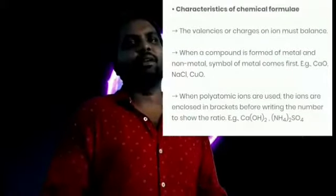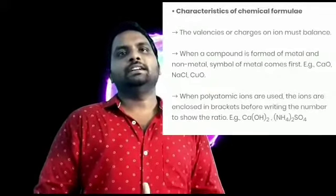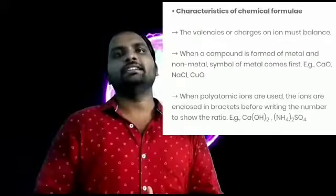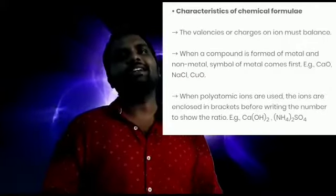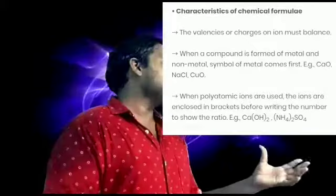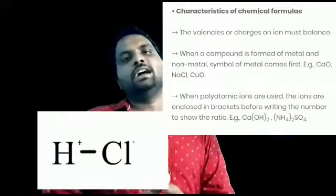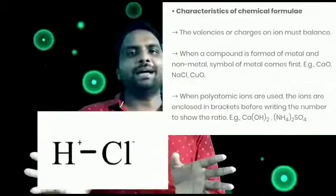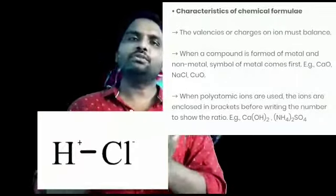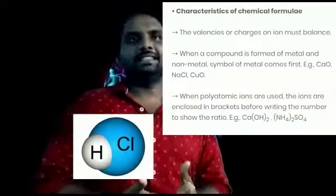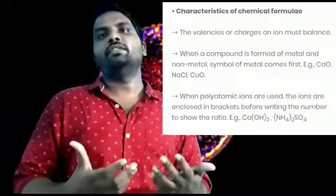Now let's look at the characteristics of chemical formulas — the rules to follow when writing them. The first rule: we must consider the valency or charge, and these must be balanced. For example, in hydrochloric acid (HCl), hydrogen has a charge of +1 and chlorine has a charge of −1. These balance each other: +1 and −1 cancel to zero, so HCl is balanced. The valency and charges on ions must balance.